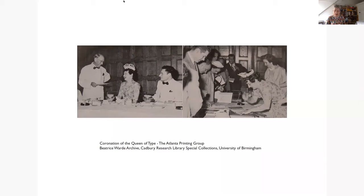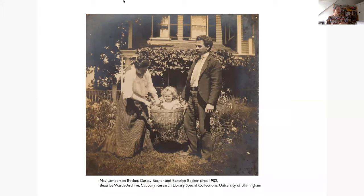She was born in New York in 1900, the only child of May Lamberton Becker and Gustav Becker, who was a composer and acclaimed musician. Here we have a lovely family photo from around 1902. This photograph comes from the Cadbury Research Library, the Beatrice Ward Collection, and I'm very grateful to the Cadbury Research Library for allowing me to share these images. This looks like a very happy scene, but by 1908 her parents' marriage had ended. Beatrice's father went on to remarry and have a second family, and Beatrice was brought up by her mother and widowed grandmother.